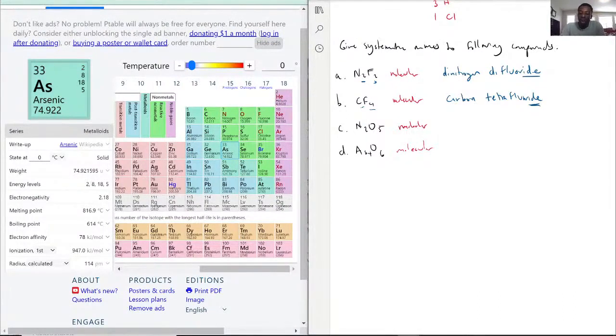This one here, N2O5, this would be dinitrogen pentoxide.